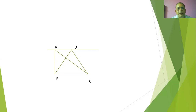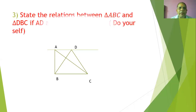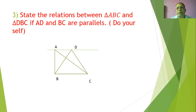Another very short version: you have a figure with triangle ABD and triangle BDC — two triangles both standing on the same base and between the same parallels. State the relation between triangle ABC and triangle DBC if AD and BC are parallel.